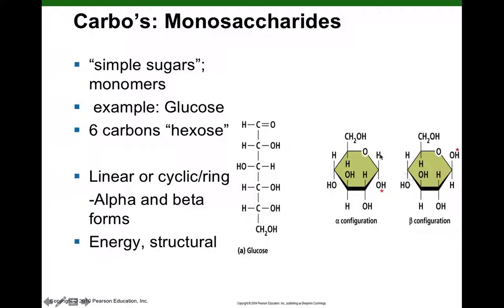Glucose probably spends most of its time in the ring forms. There are two different configurations of glucose in the ring form. One is called alpha glucose, where the hydroxyl group on carbon one is pointing downward, below the plane of the ring structure. The opposite orientation — hydroxyl pointing up above the plane — is called beta glucose.